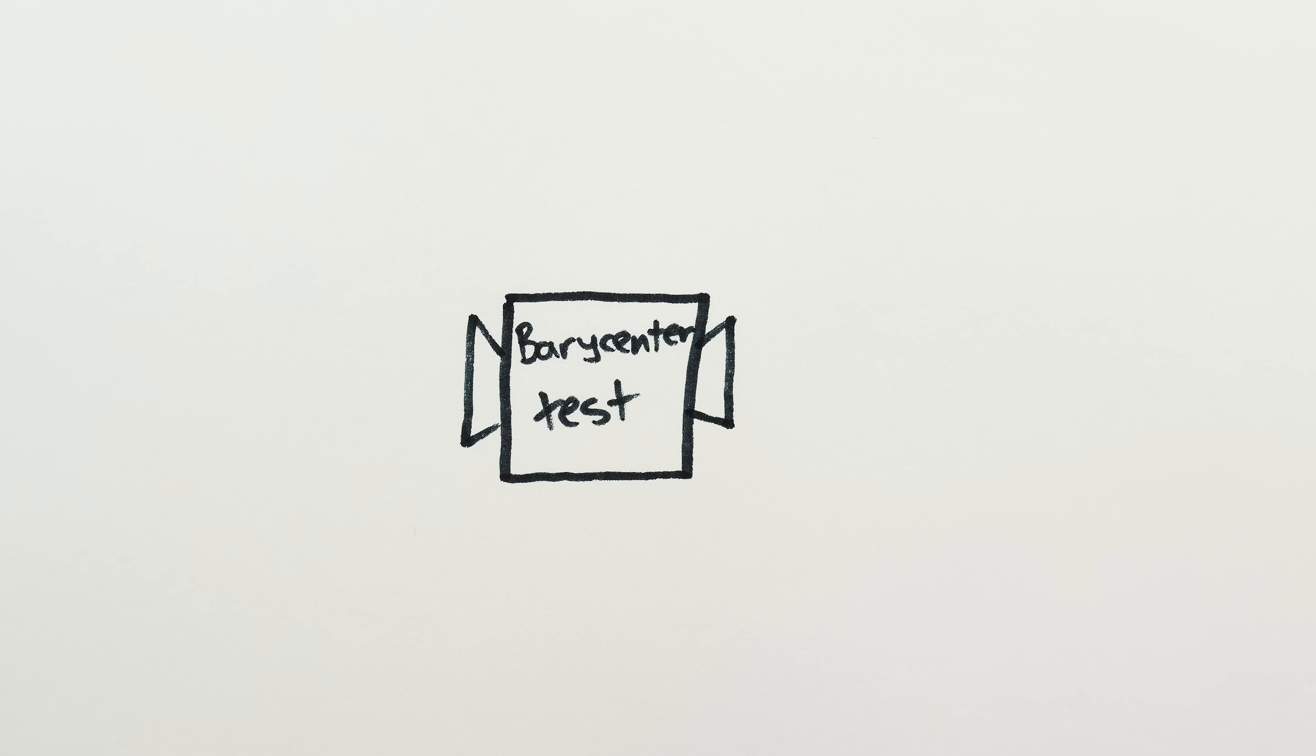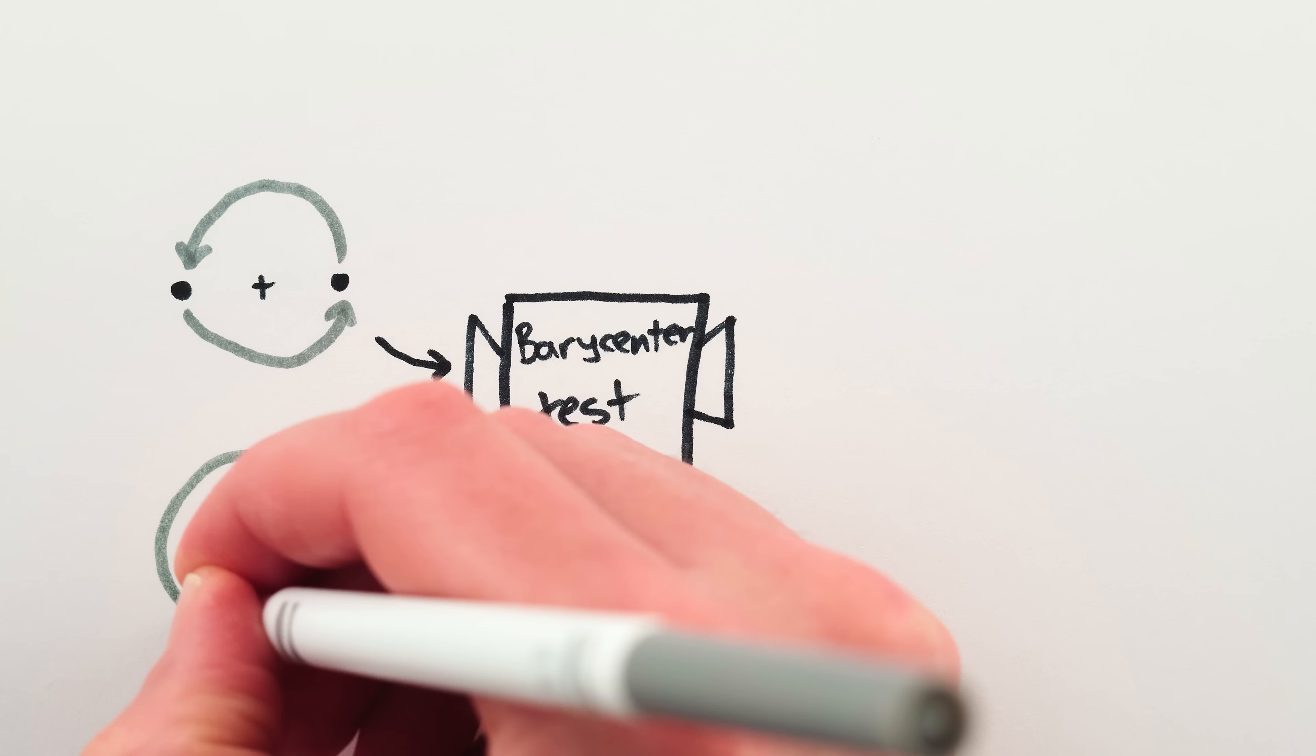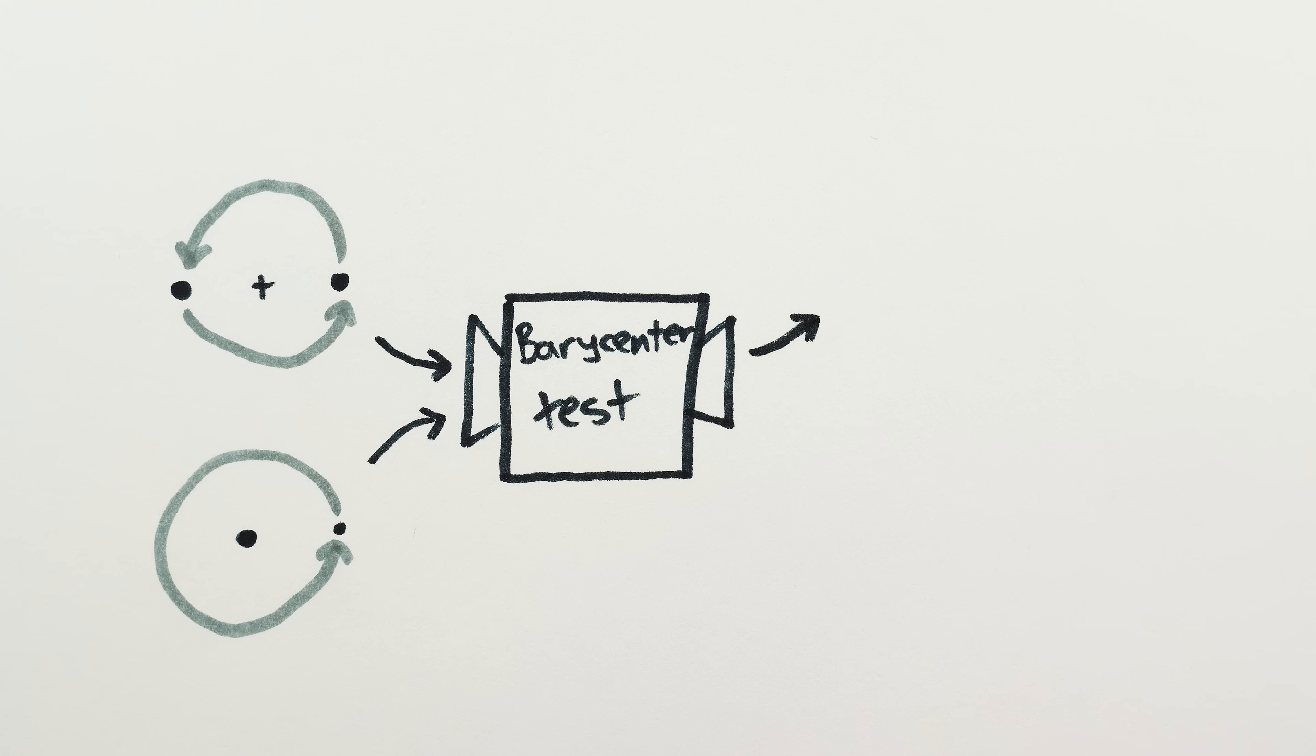The problem is, with the barycenter criteria, binary-looking orbits and satellite-looking orbits can both get labeled as either binaries or satellites. What's more, objects with elliptical orbits move closer or farther from the barycenter throughout their orbit, and so they can have the barycenter move from outside them to inside to outside to inside over and over again.